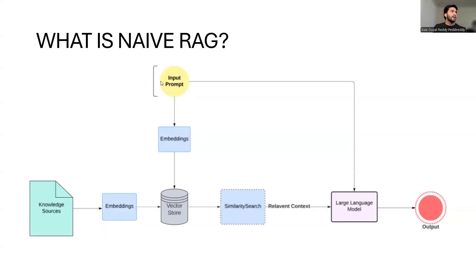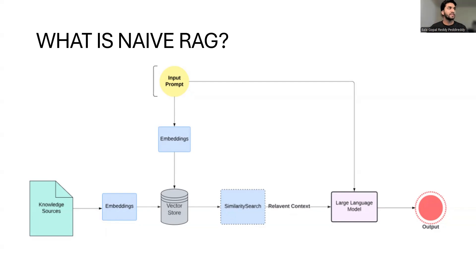So this is the flowchart. As you can see, there are so many components — we have Knowledge Sources, Embeddings, Vector Stores, and the Large Language Model. In order to get a deeper understanding about RAG, I would recommend you to watch my previous video where I've explicitly covered all of this, including the retrieval phase and generation phases as well. I'll be attaching the link in the description as well as on the top right corner.